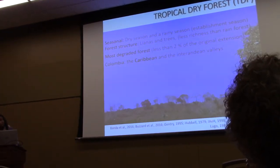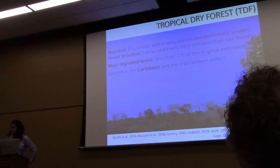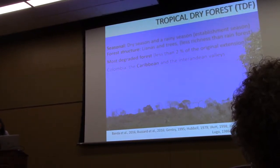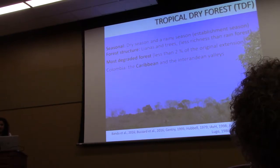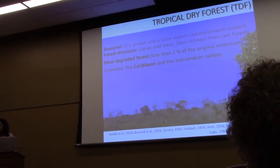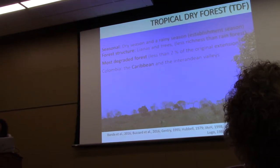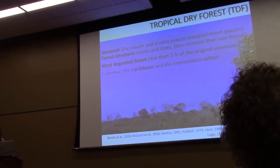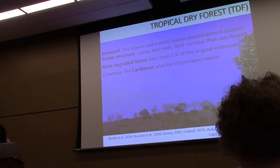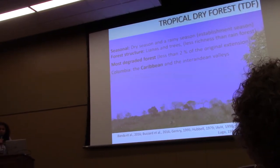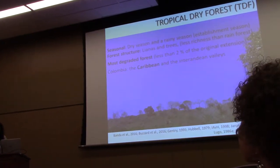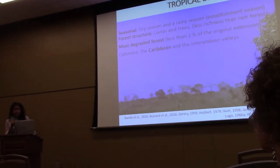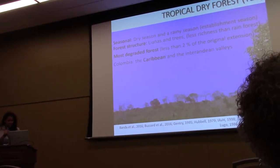The ecosystem we picked for that was the tropical dry forest, a forest formation found in Colombia. Its main characteristic is that it is seasonal, with a dry season and a rainy season. The rainy season is the establishment season because it's the only moment when plants can take water for germination to occur. The forest structure is dominated by lianas and trees, and it is less rich than other lowland forests like the rainforest. It's one of the most endangered ecosystems in the tropics, with less than 2% remaining of its original extension, found in Colombia's Caribbean and inter-Andean valleys.